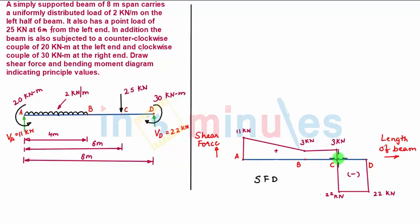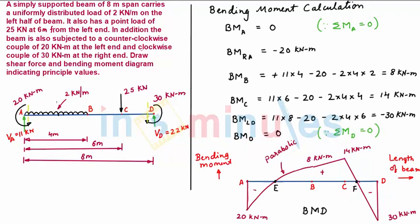The bending moment is maximum at the point where the shear force changes its sign. At point C, the shear force changed sign from positive to negative, so the positive bending moment is maximum there. As evident in the bending moment diagram, the positive bending moment is maximum at point C, with a value of 14 kilonewton meter. With this, our problem is solved.